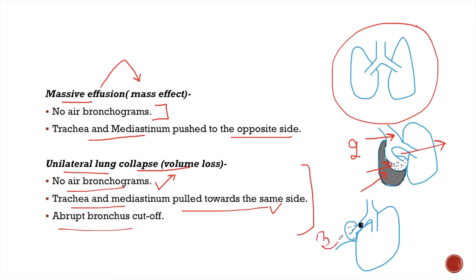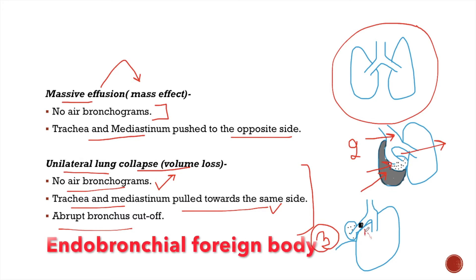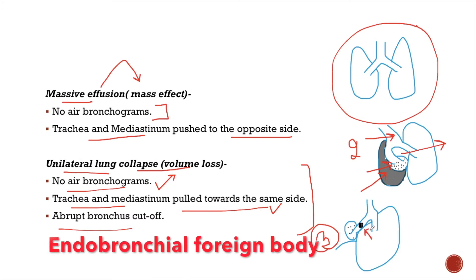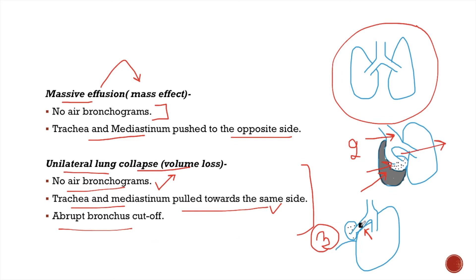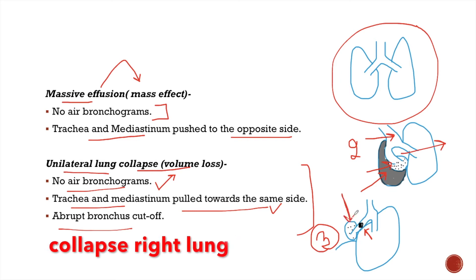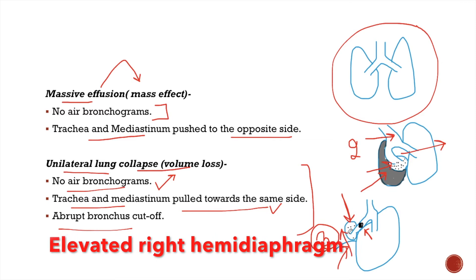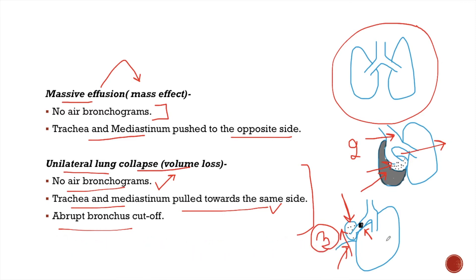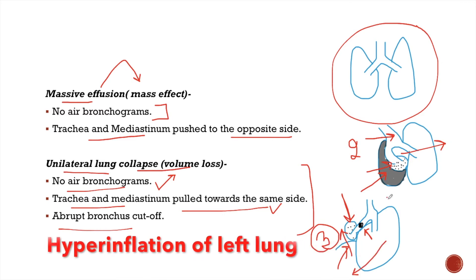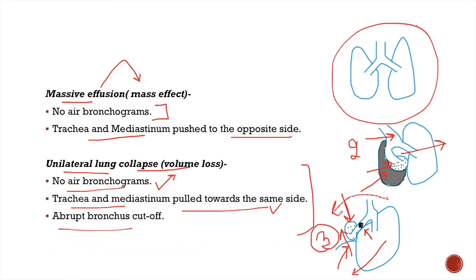Take this third image as an example. In this image, we can see that there is an endobronchial foreign body in the right main bronchus. This endobronchial foreign body has caused obstruction of the right main bronchus and the right lung is collapsed. There are features of volume loss of the right lung: elevation of the right hemidiaphragm, hyperinflation of the left lung, and deviation of trachea and mediastinum towards the right side.